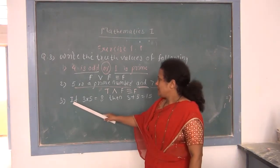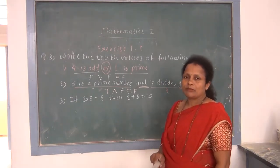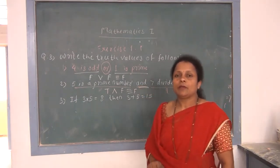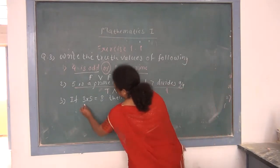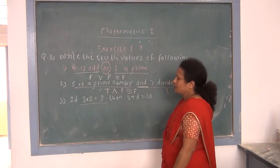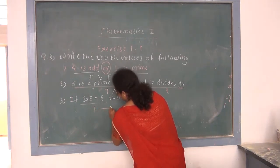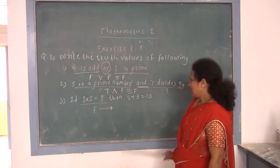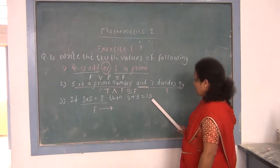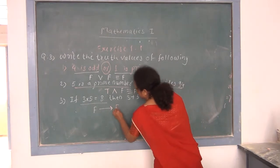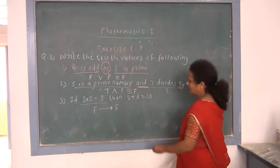Third: a conditional statement. P = '3 × 5 = 15' — but 3×5 = 15, wait: given as 8, so truth value is false. Q = '3 + 5 = 15' — but 3+5 = 8, so truth value is false. In conditional logic, F → F is equivalent to T. So the resultant compound statement is true.